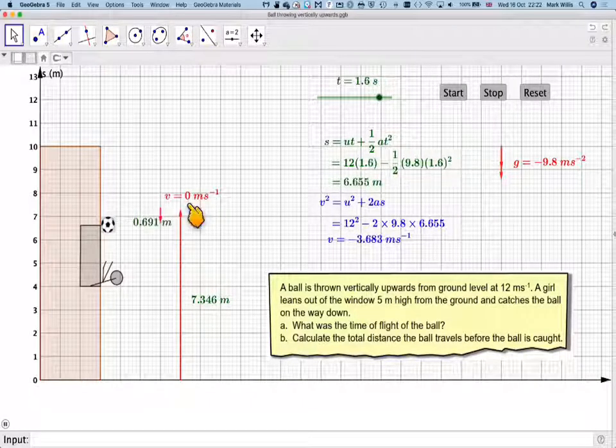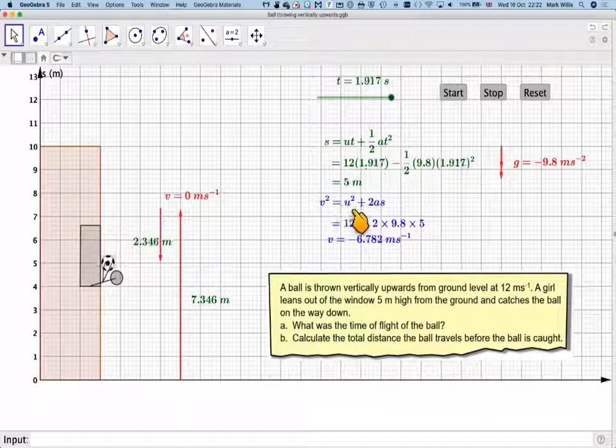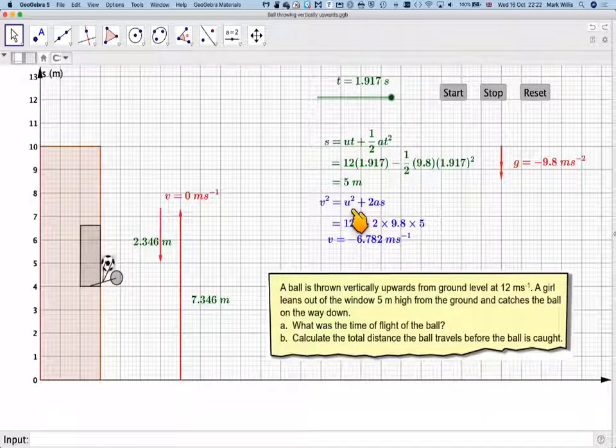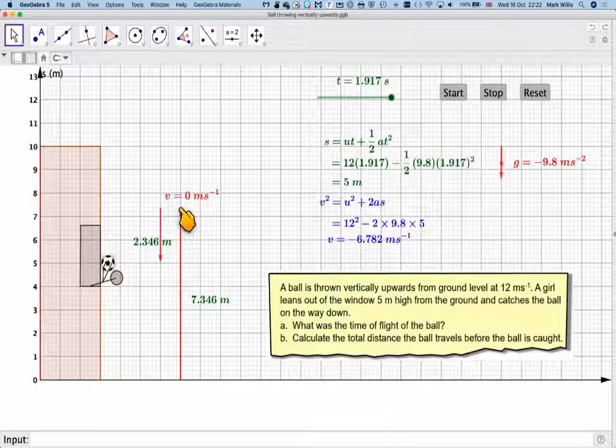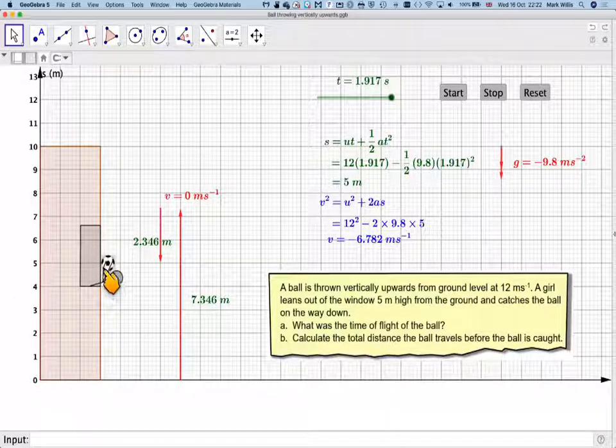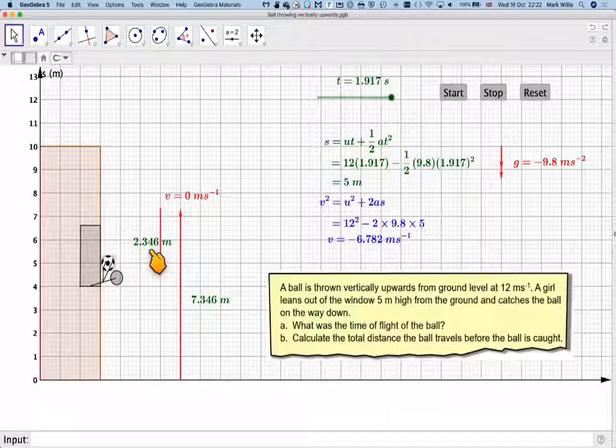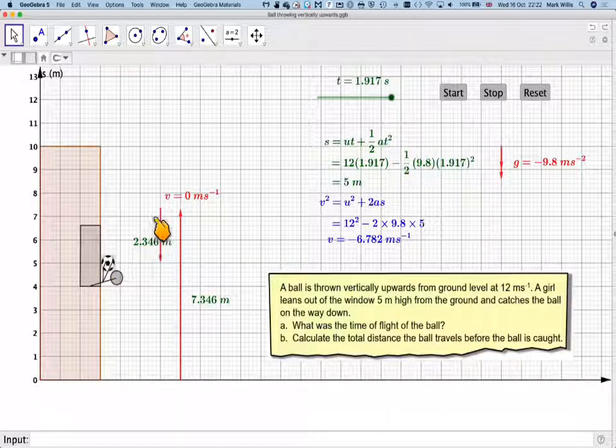So we need to find when v is equal to 0 using v squared is equal to u squared plus 2as. And then we need to find this distance. And once we've found this distance, actually all we need to do is subtract 5 from it to get the distance that it goes down.